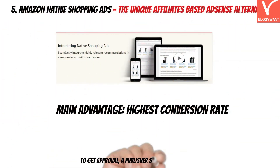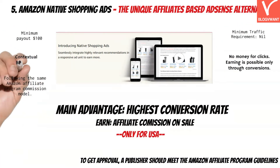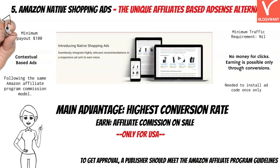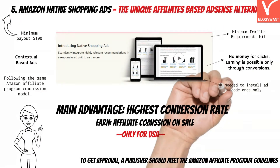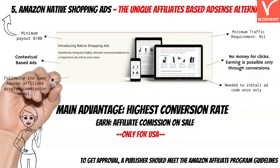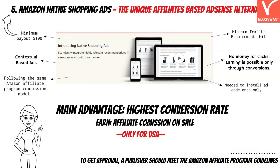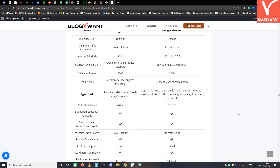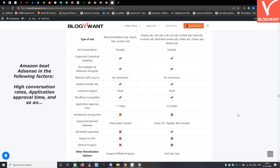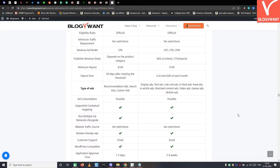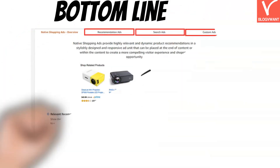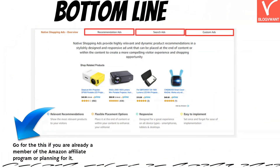The next AdSense alternative for small traffic blogs is Amazon Native Shopping Ads. If you have already enrolled in the Amazon affiliate program and you are from the USA, you should consider this unique AdSense alternative. In this ad program, you don't have to place affiliate links manually. You just place the ad code on the content and Amazon delivers relevant contextual-based product ads on the web page. You will be paid in the same way as through the Amazon affiliate program. Check out this table to learn why Amazon Native Shopping Ads is the best alternative for AdSense. Implement these ads if you are already a member of the Amazon affiliate program or are planning to join.